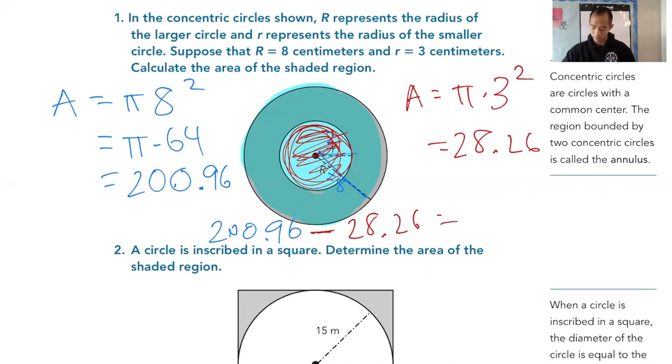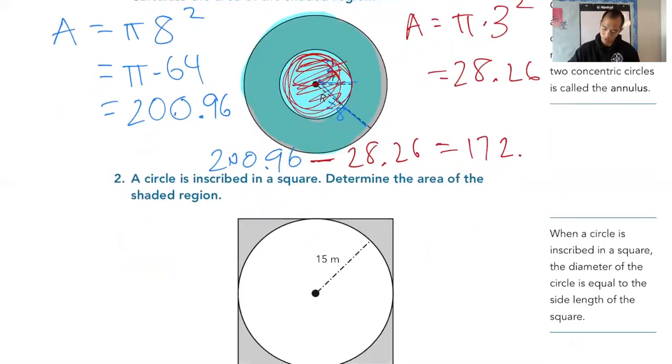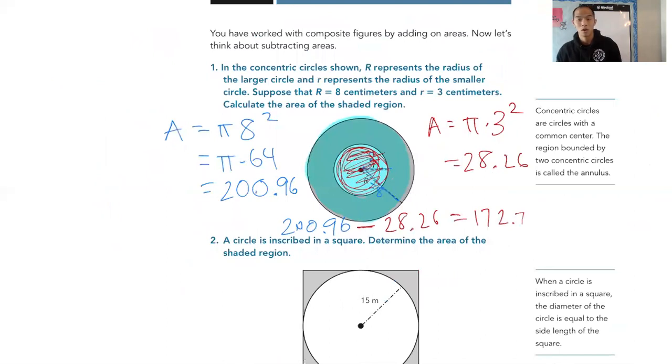So I'm going to just subtract 200.96 minus 28.26 and I get 172.70. Let's go ahead and there you go.